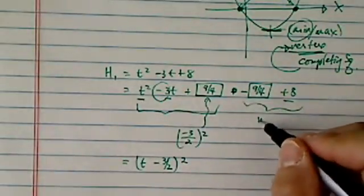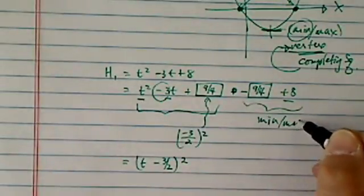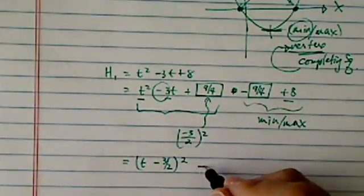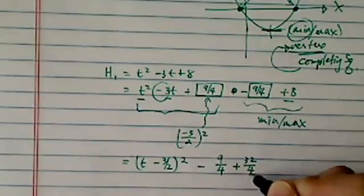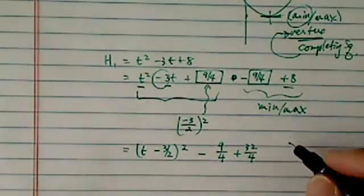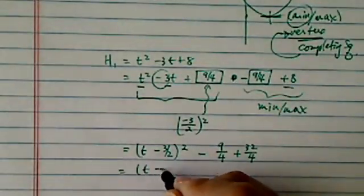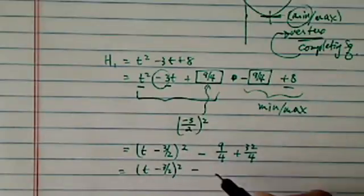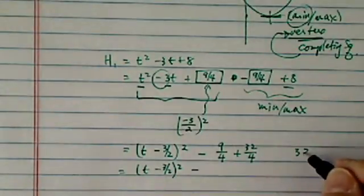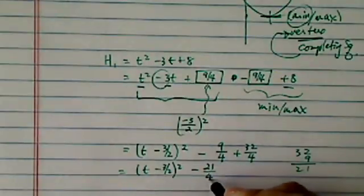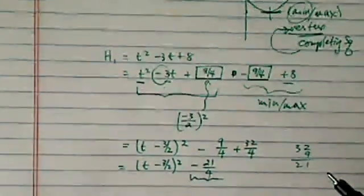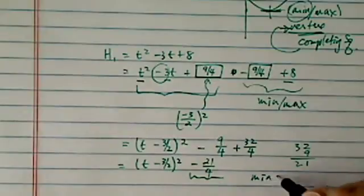Then you are going to clean this up. This is your minimum, maximum, extreme value. In our case it will have 9 over 4 plus 32 over 4. Then in my final complete square after I clean everything, so it is 32 and 9, that is 21. Minus 21 over 4. This is my minimum value. Min is equal to minus 21 over 4.